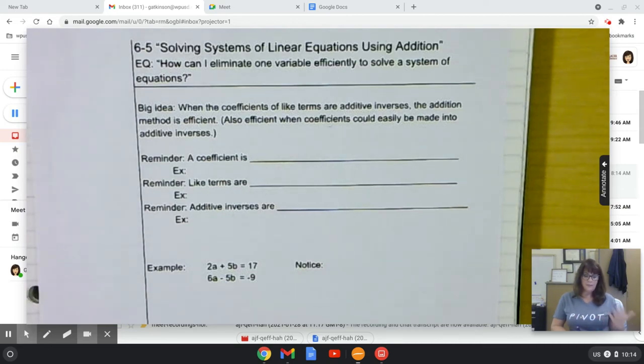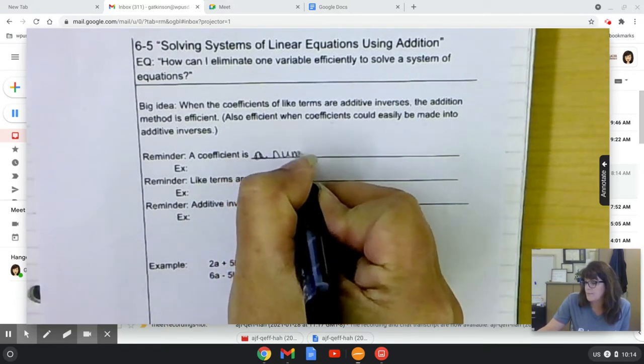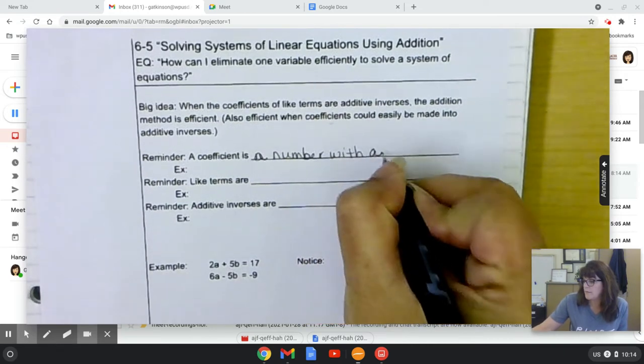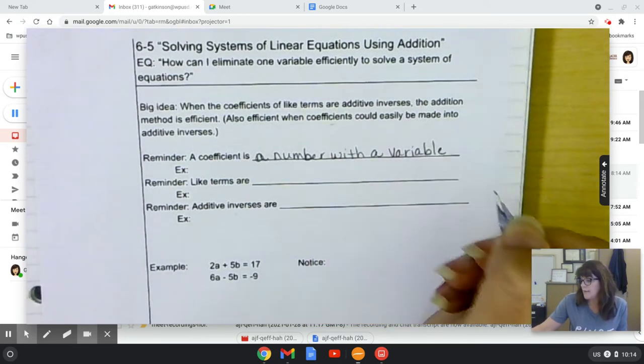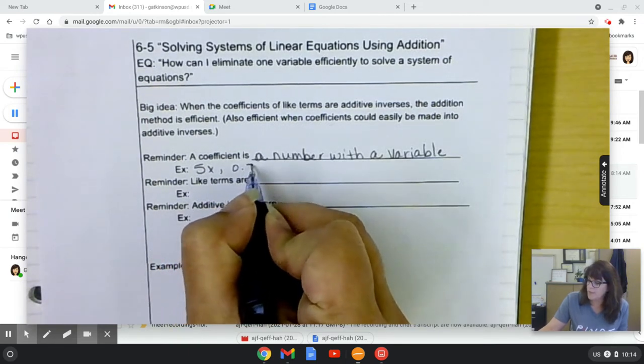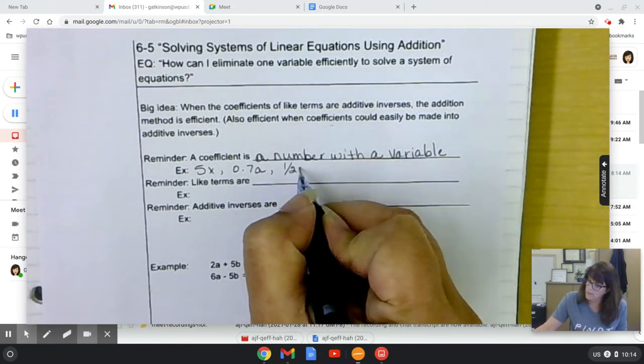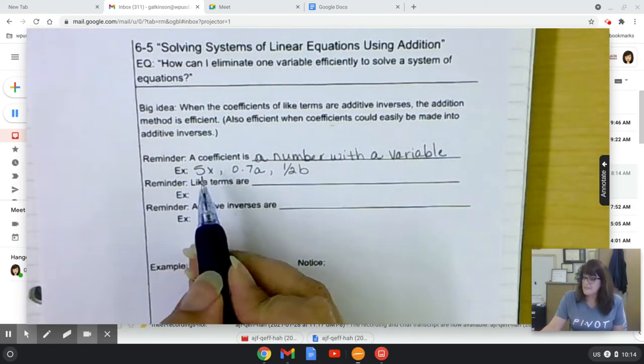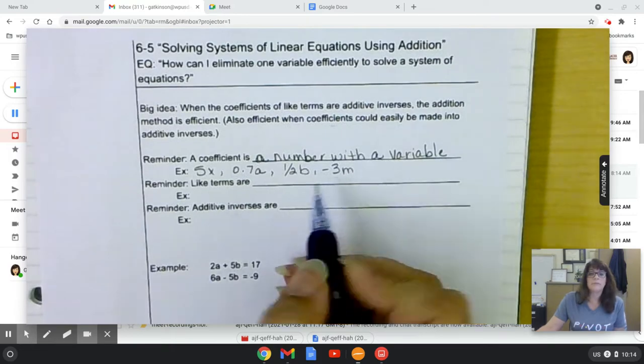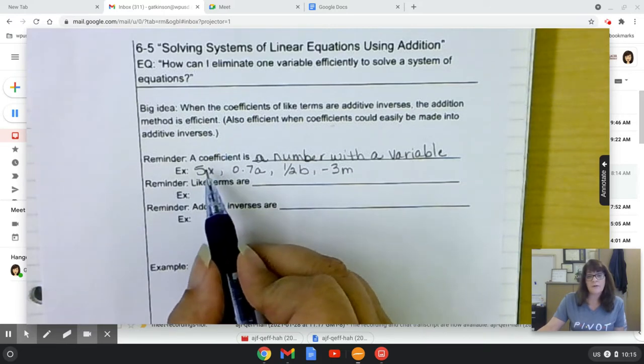Just a reminder, coefficients. A coefficient is a number with a variable, usually being multiplied. Examples: 5x, 0.7a, 1 half b, negative 3m. It doesn't have to be a whole number. Positive, negative, decimal, any number that is being basically multiplied with the variable, that's a coefficient.